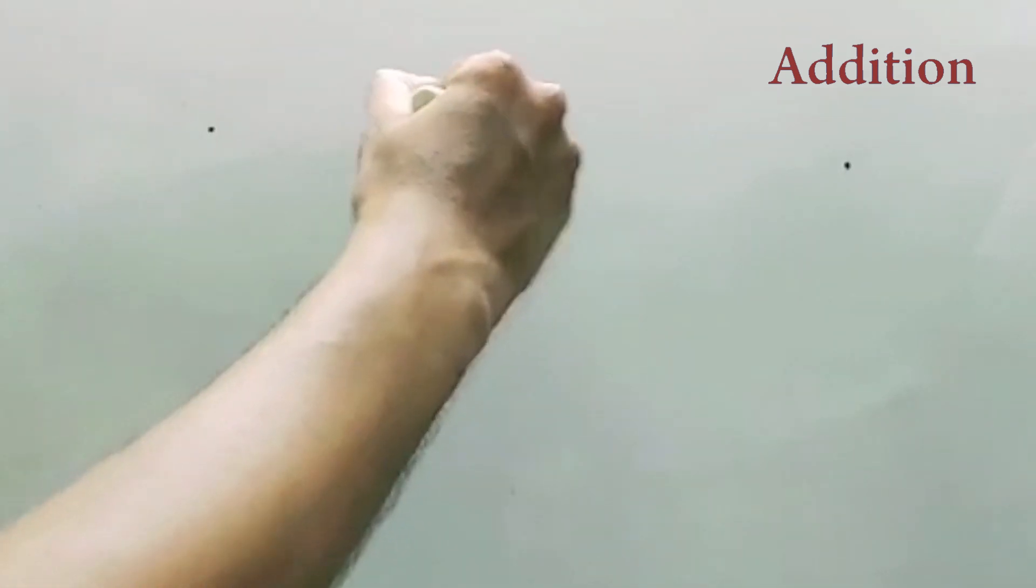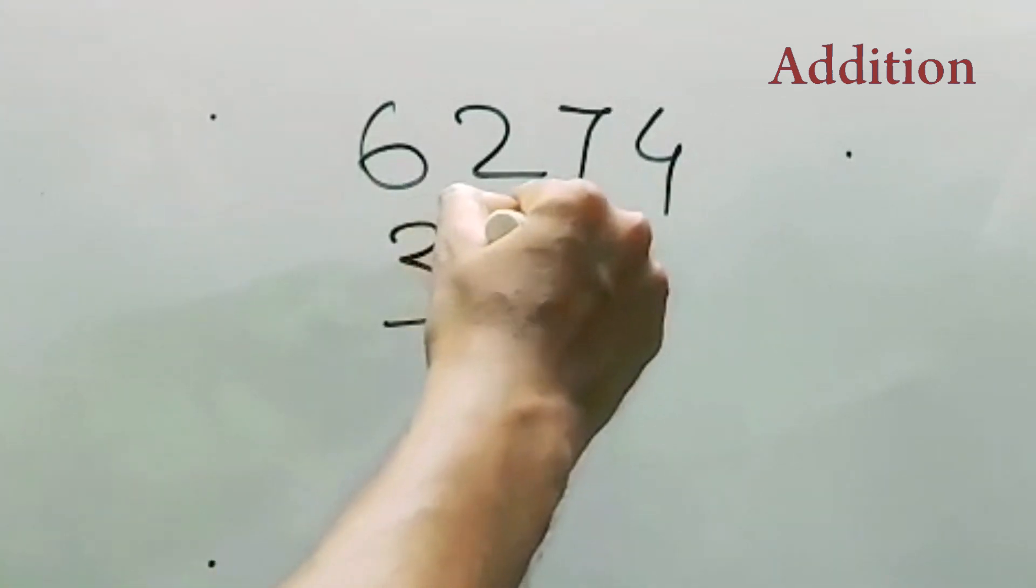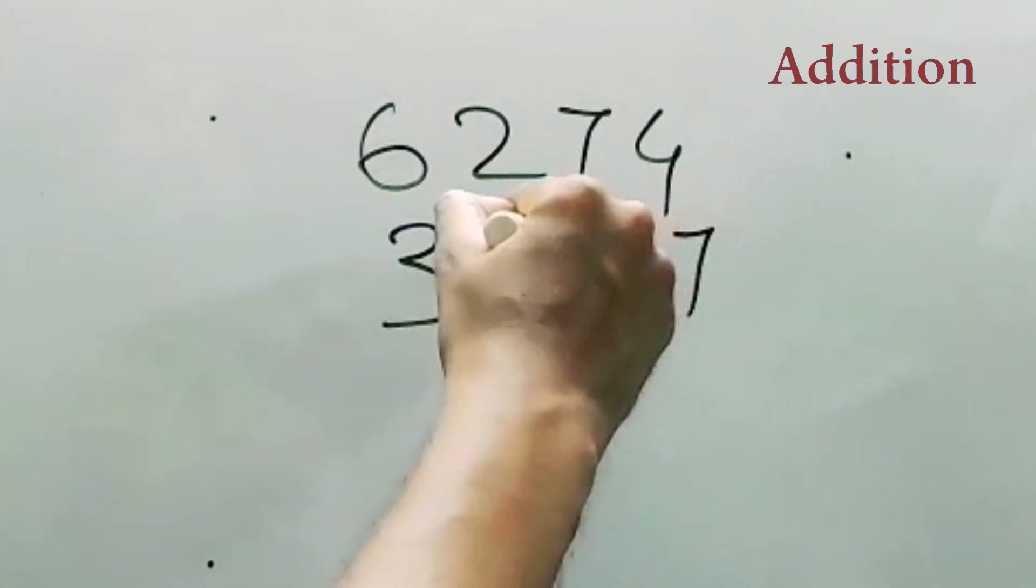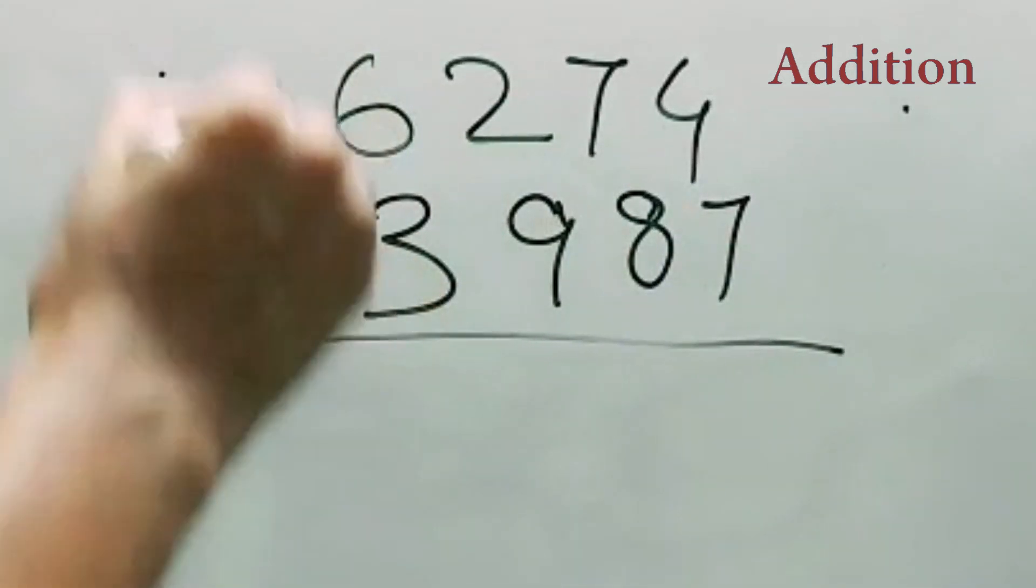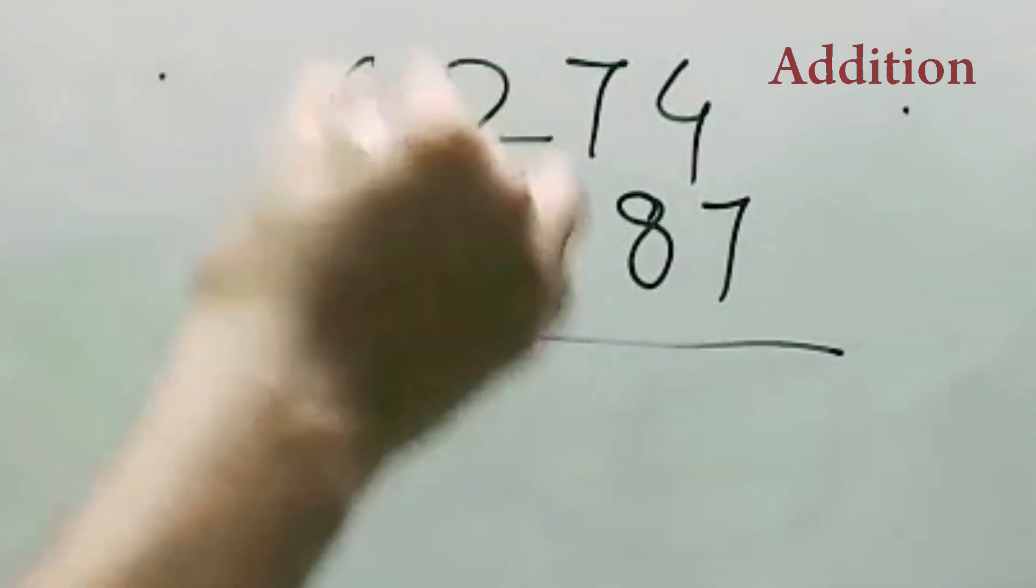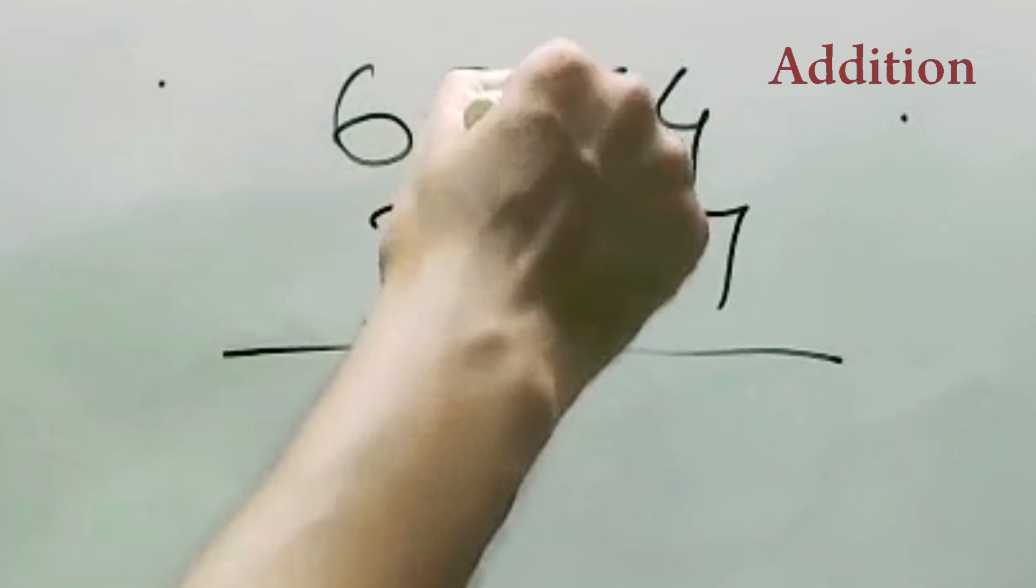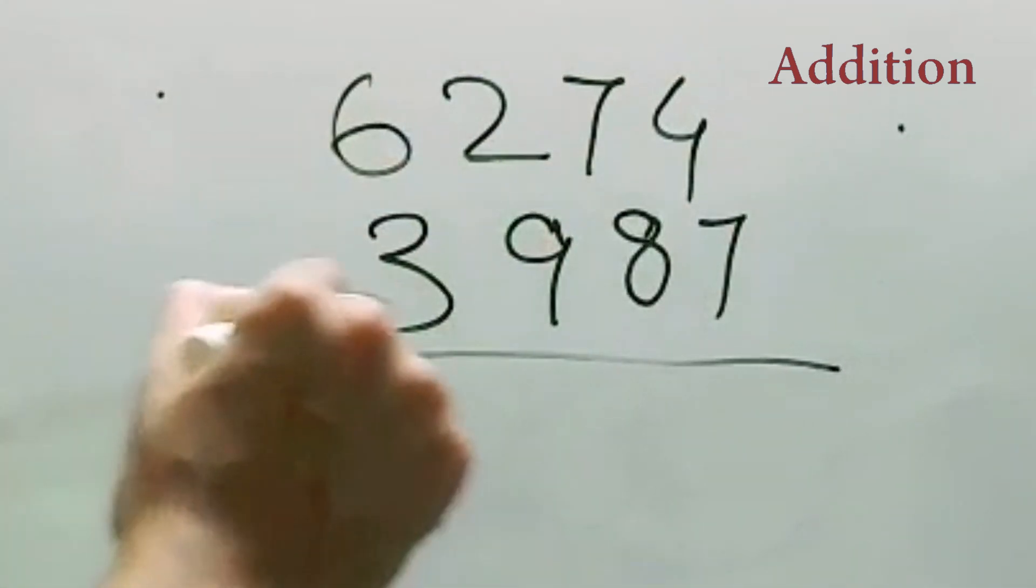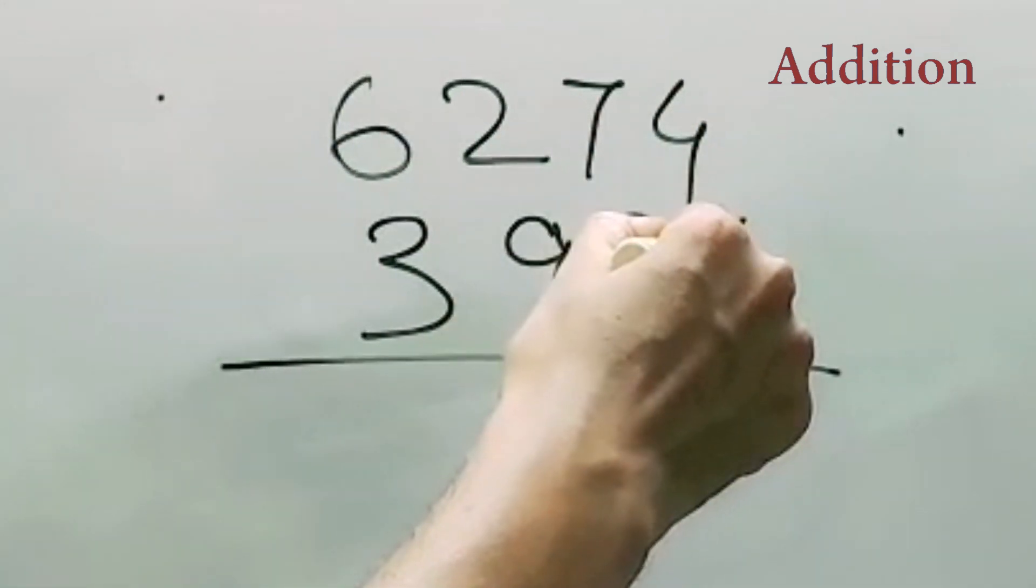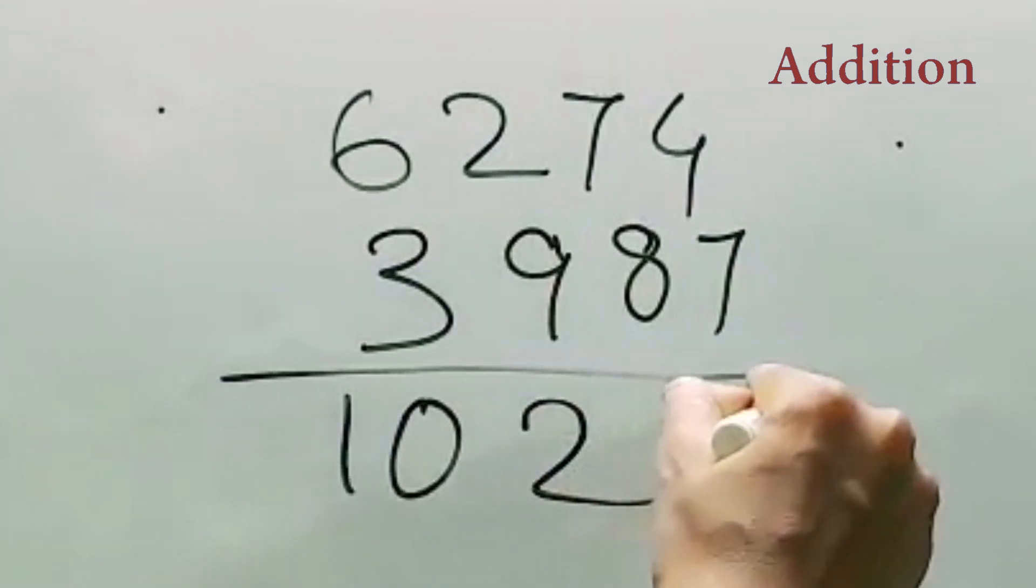Let's try a four-digit number, like 6274 and 3987. So 6000, 3000, that is 9000, 9 plus 2 is 1100, so 1000 added, that is 10000, and 7 plus 8, 15, that is 150, so 100, that is 200, so 10200, and 4 plus 7 is 11, so 61. 10261. You like it?